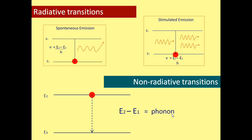Both processes usually occur in materials at the same time, and since lasers require the production of photons, we can see that a high level of non-radiative transitions will decrease the efficiency of the laser, as it will decrease the number of atoms in the higher energy state available for radiative transitions. However, non-radiative transitions are useful under some circumstances to increase the efficiency of laser light, as I will show later.